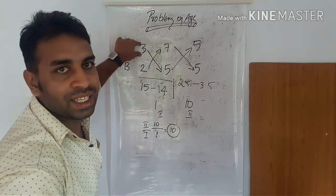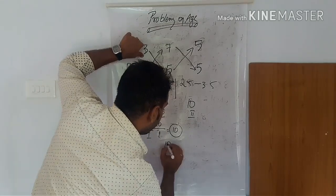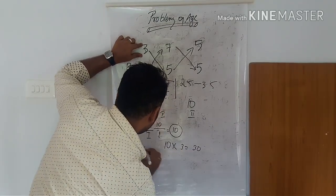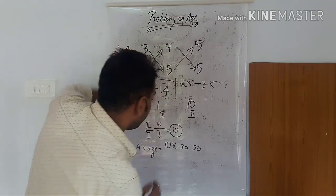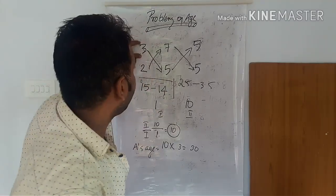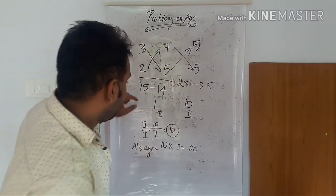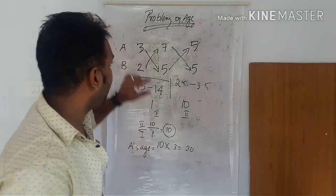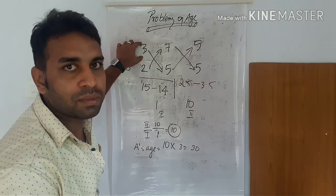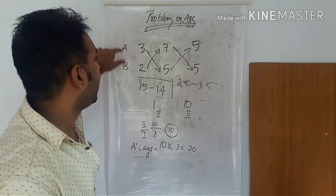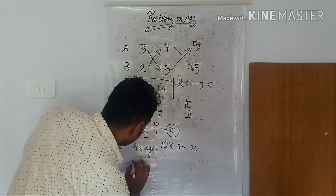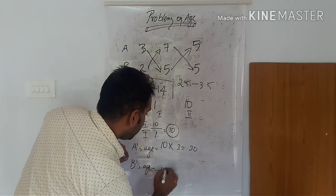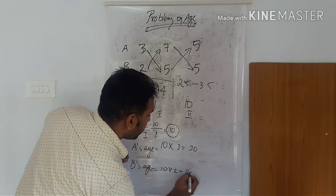Now substituting: 10 into 3. This gives A as 30. And B — when A is 30, B is 20. So A's age is 30 and B's age is 20.